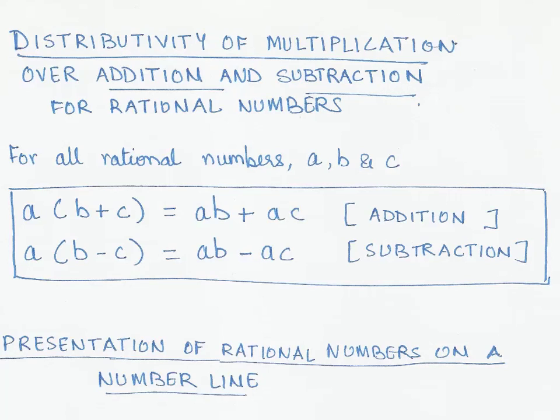So let's say for all rational numbers in this case a, b, and c. For any of these a, b, and c, if I were to multiply one of these rational numbers a, multiplied by the sum of the other two, that is b plus c, this would give me the same result if I were